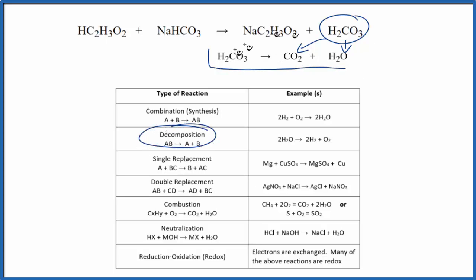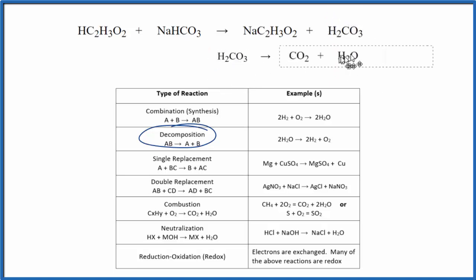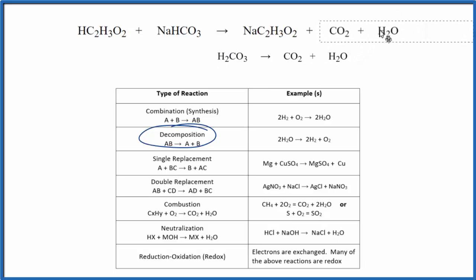So we had our initial double displacement, and now we have a decomposition reaction. If we take the CO2 and the H2O from the decomposition of the carbonic acid and replace the carbonic acid with that, we have our original equation — which is the combination of those two reactions: the double displacement and the decomposition reaction.